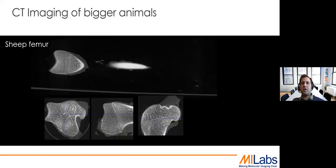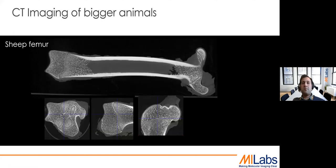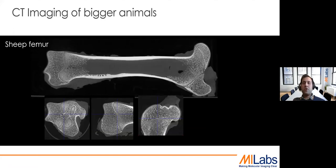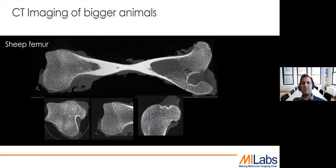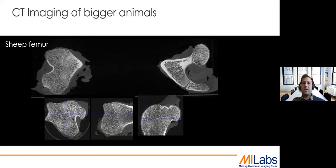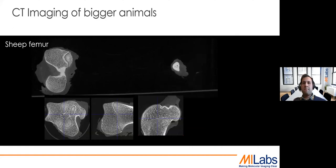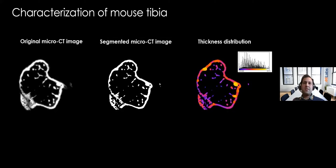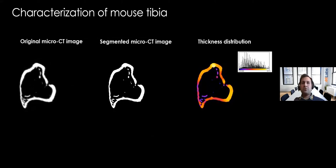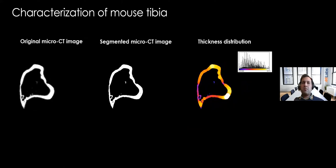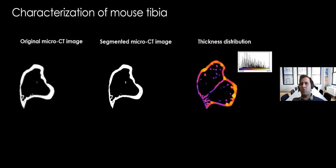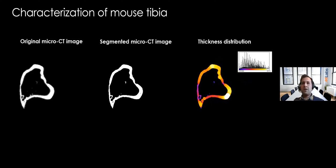We can also scan bigger objects and larger animals. Here I'm showing a sheep femur — we can nicely see the trabecular structure and the cortical bone very well. Here is a microCT image of a mouse tibia where we can segment it very well, threshold it, and do further analysis. The analysis was performed on both trabecular and cortical bone thickness, and we can easily derive the distribution of thickness throughout the bone.